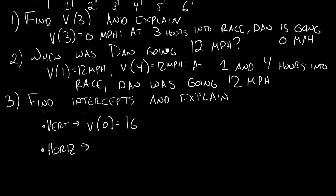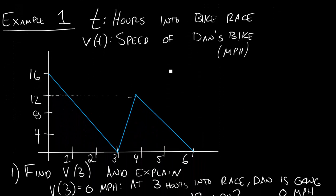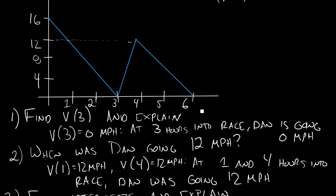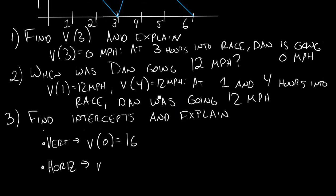Horizontal intercepts are where the graph of the function crosses the horizontal axis. Looking at the graph, it crosses the horizontal axis here, but it also crosses it over here. You can have more than one horizontal intercept — you cannot have more than one vertical intercept. This happens at 3 hours and 6 hours into the race. In notation: V of 3 equals 0 miles per hour, and V of 6 equals 0 miles per hour. At 3 hours into the race I was going 0 mph, and at 6 hours I was going 0 mph.